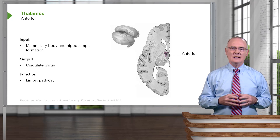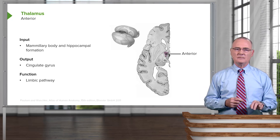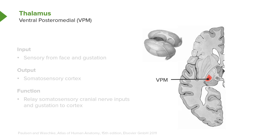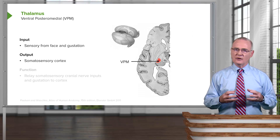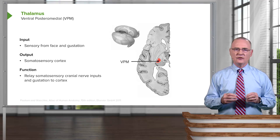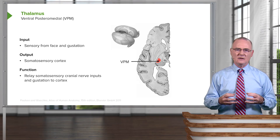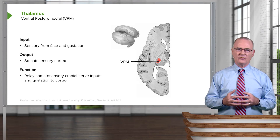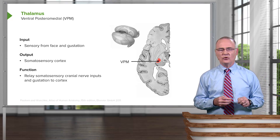The limbic pathway is discussed in detail in another lecture. Next we have the ventral posteromedial nucleus, or simply VPM, highlighted here. Input to the VPM is sensory from the face and taste (gustation). The output from this nucleus goes to the somatosensory cortex. Consequently, this nucleus is involved in relaying somatosensory cranial nerve inputs and taste or gustation to the cortex.